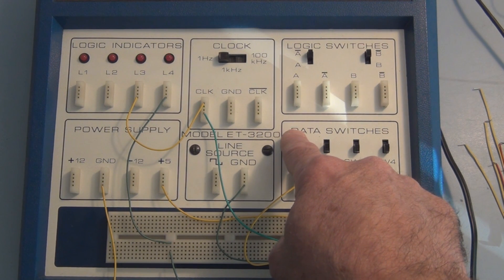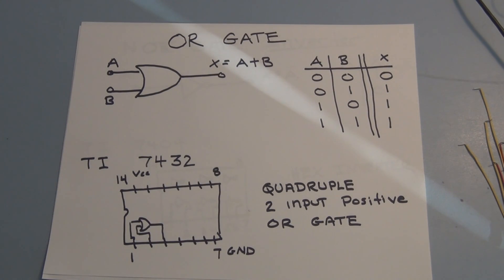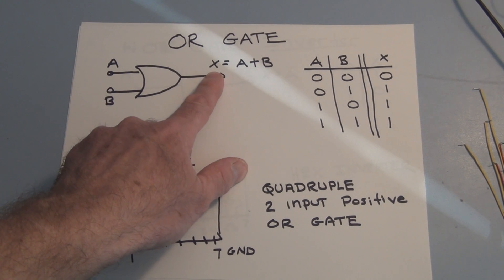OK, let's take a look at the OR gate. So this is the symbol for the OR gate. Again, this is a two-input OR gate.